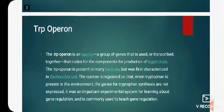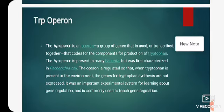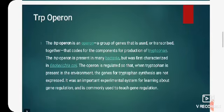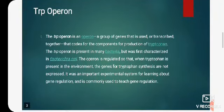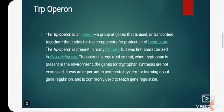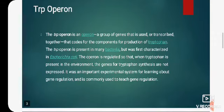Students, this TRP operon is also called tryptophan operon. The TRP operon is an operon, a group of genes that is used or transcribed together, that codes for the components for production of tryptophan. The TRP operon is present in many bacteria but was first characterized in Escherichia coli.